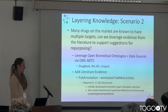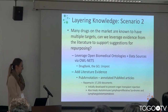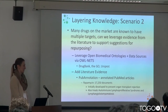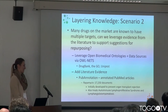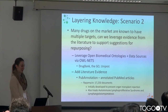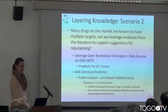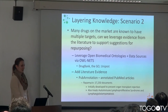A separate scenario: many drugs on the market are known to have multiple targets. Can we leverage evidence from the literature to support different suggestions for repurposing? There are lots of different open biomedical ontologies like DrugBank, GO, and UniProt that we can use to build a network to do inference on, but we need to also put evidence behind that.